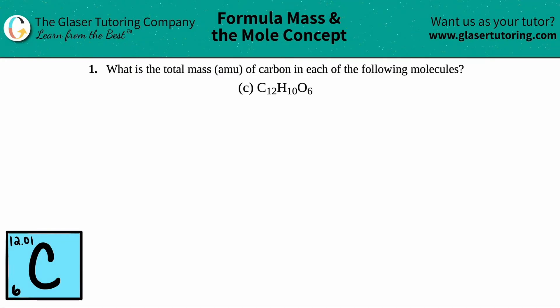Number one: what is the total mass in AMU of carbon in each of the following molecules? And then we have letter C. So in this case, we have C12H10O6.